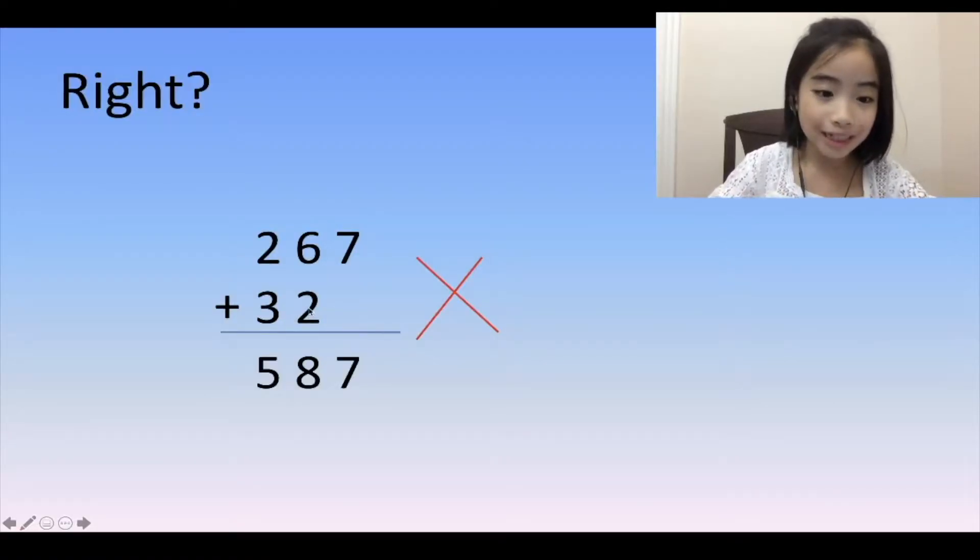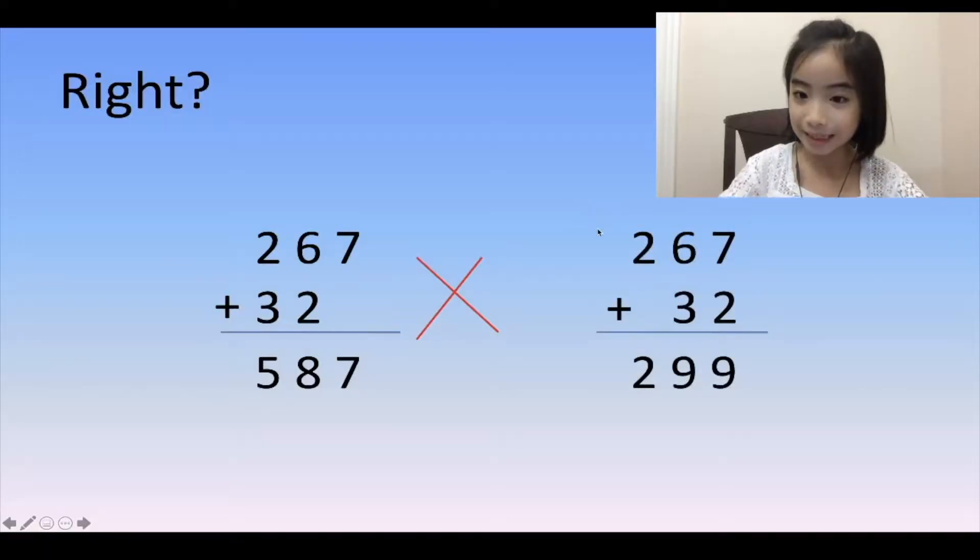The two is in the tens position, but it should be in the ones position. So the correct form is like this. 267 plus 32 equals 299.